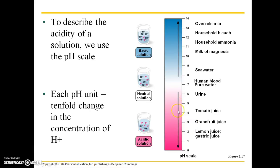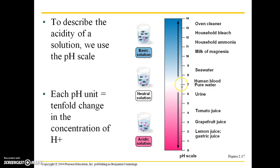For acidic solutions such as lemon juice or gastric juice — which is the solution within our stomachs that makes chemical digestion possible — those are going to be very acidic solutions. Grapefruit juice and tomato juice are also acidic. Urine is just slightly acidic. Pure water is a neutral pH, which is 7.